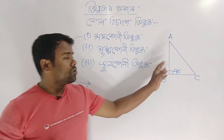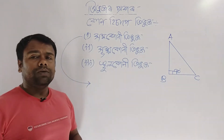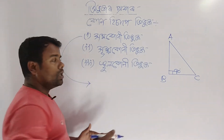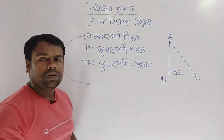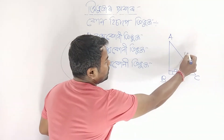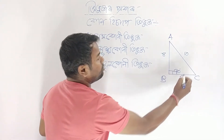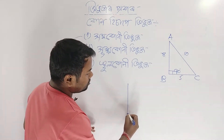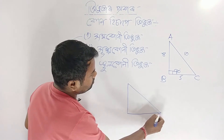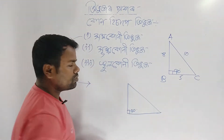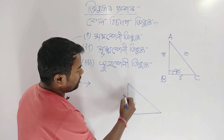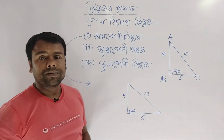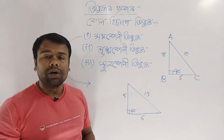Suppose the sides are 10, 8, and 5. One angle is 90 degrees. In this case, the same sides are 5 cm and 5 cm.